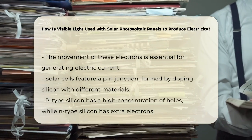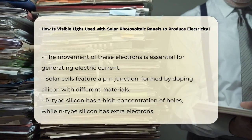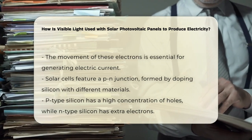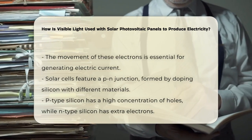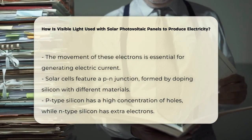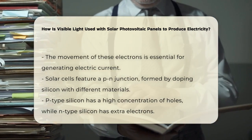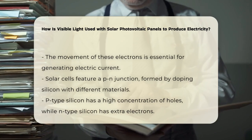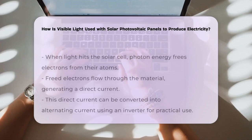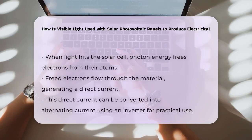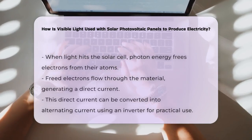The solar cells contain a p-n junction, which is formed by doping silicon with different materials. The p-type silicon has an abundance of holes, while the n-type silicon has extra electrons. When light hits the solar cell, the energy from the photons frees electrons from their atoms, allowing them to flow through the material.